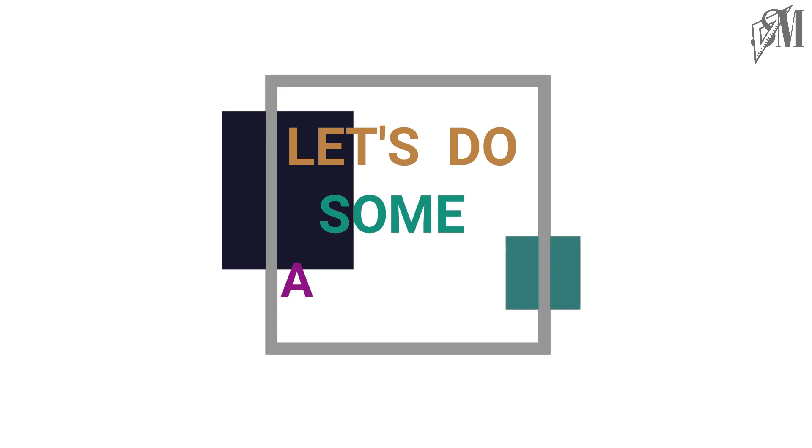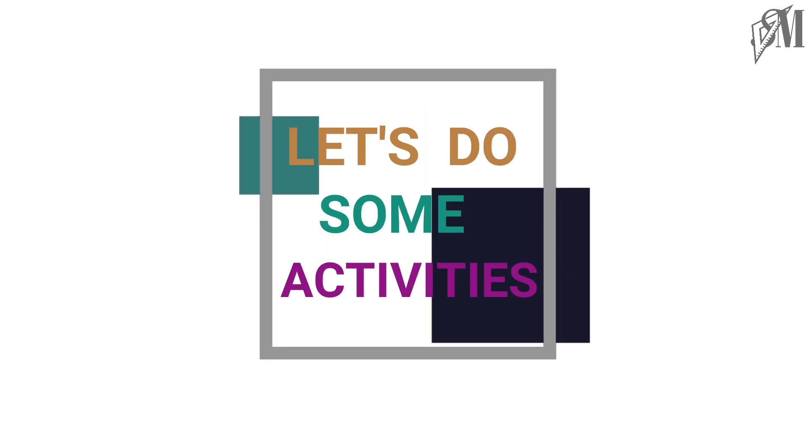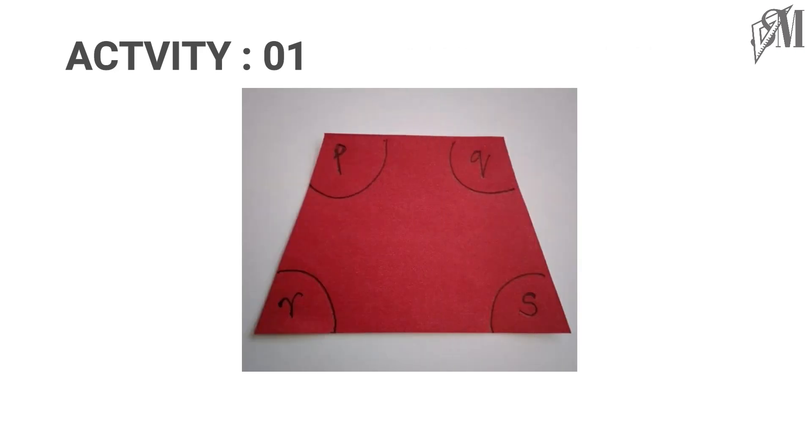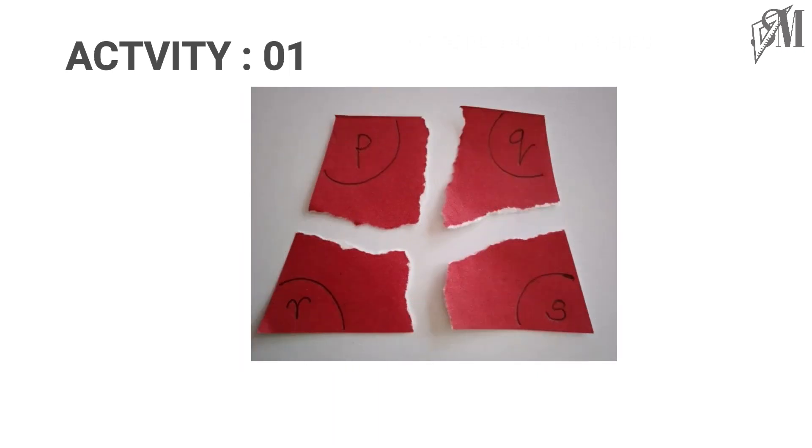Now let us work out some activities to find more about angles of a quadrilateral. Activity one: take any quadrilateral you like and name the interior angles as P, Q, R, and S. Then separate the angles of quadrilateral.